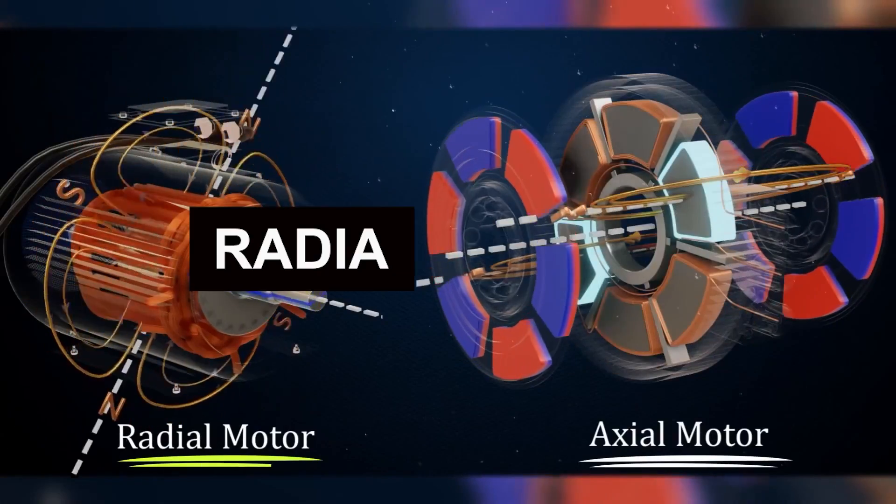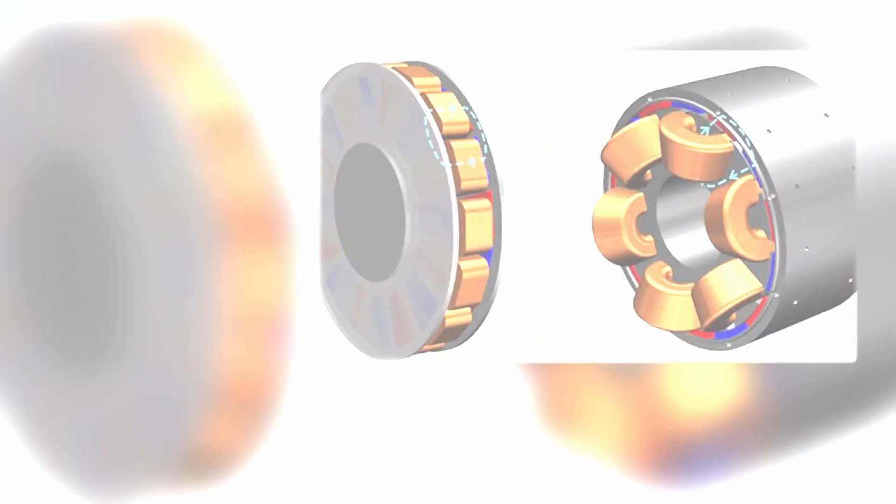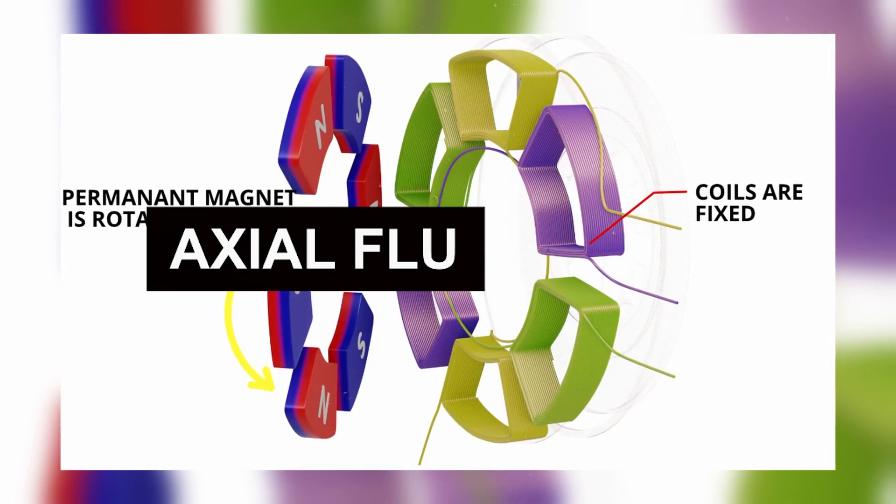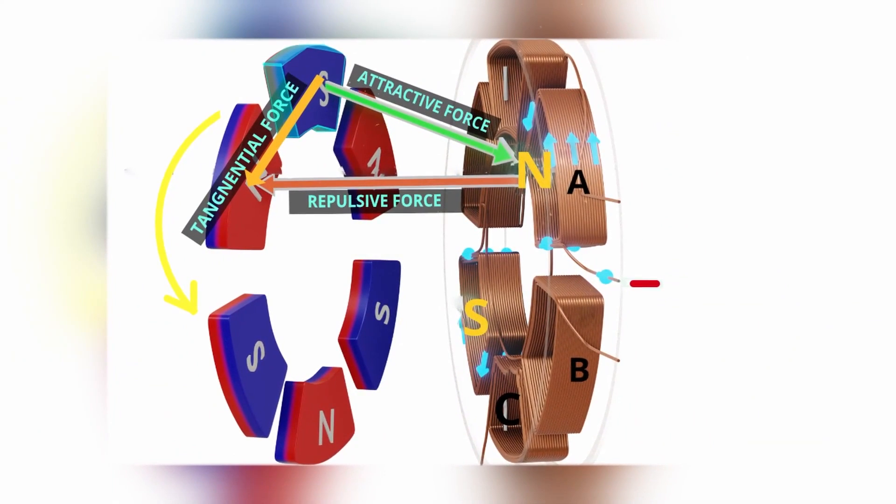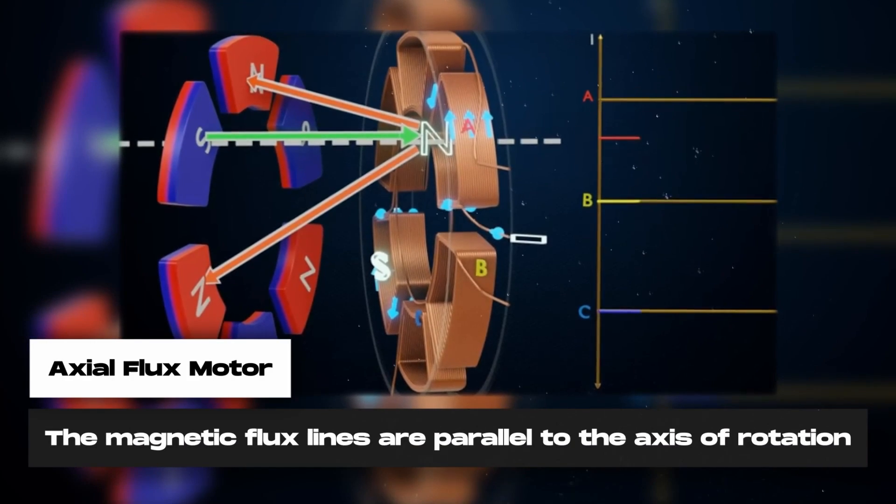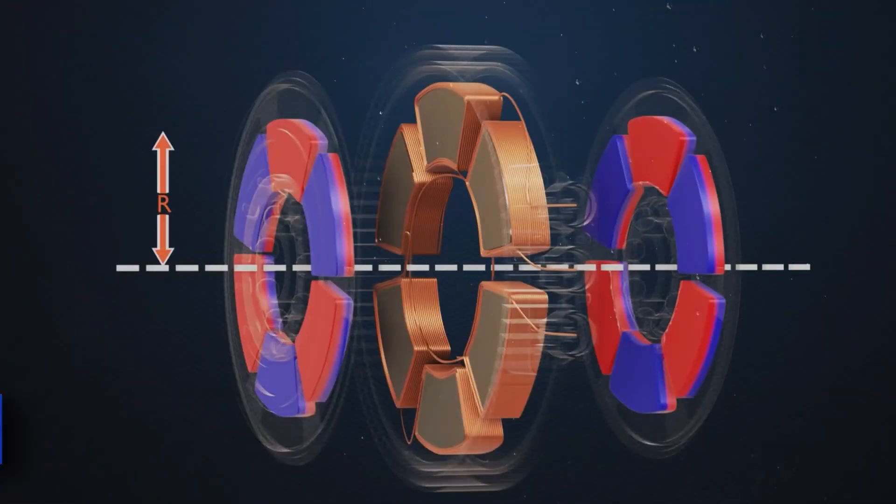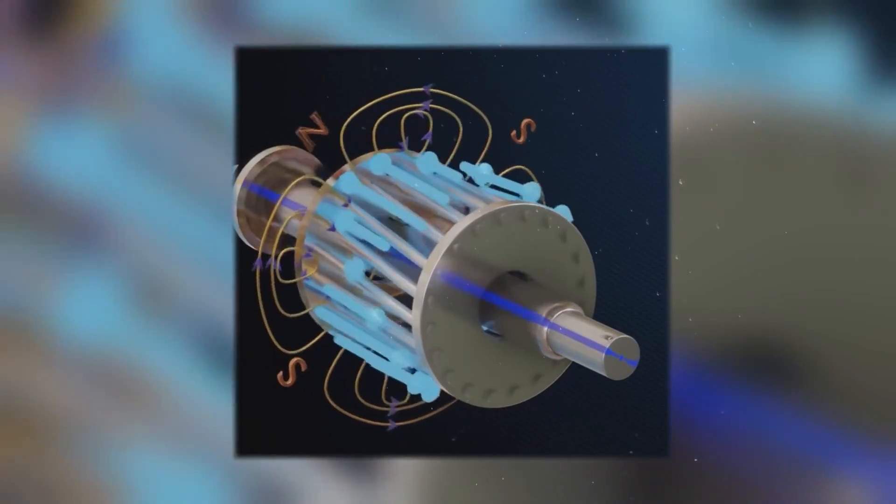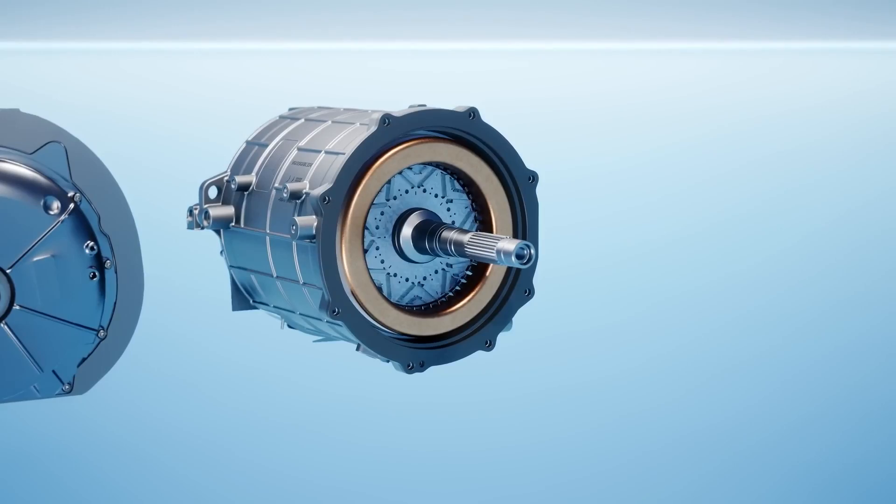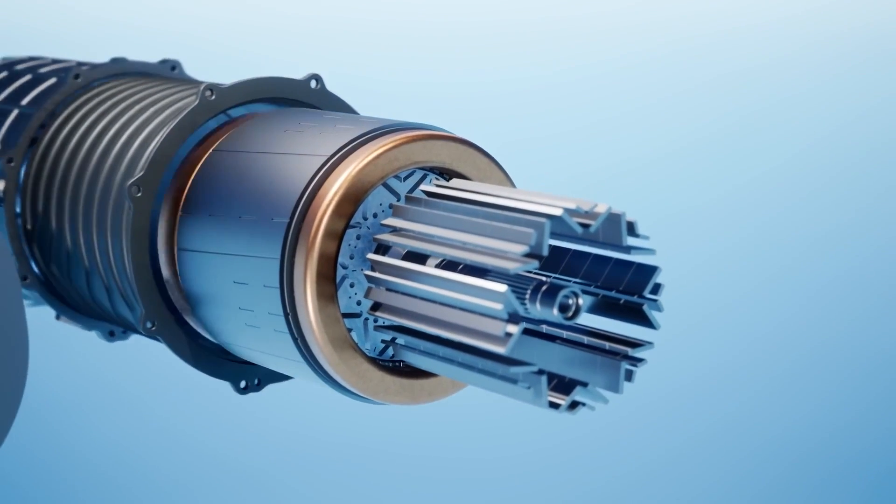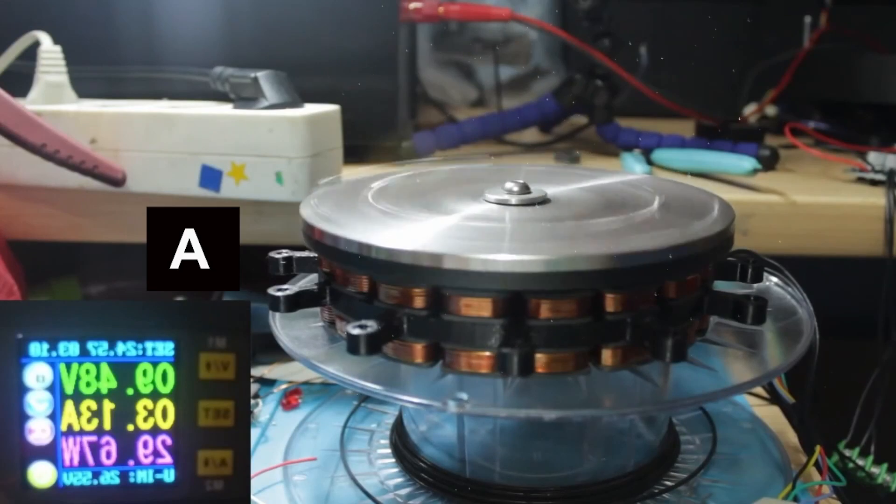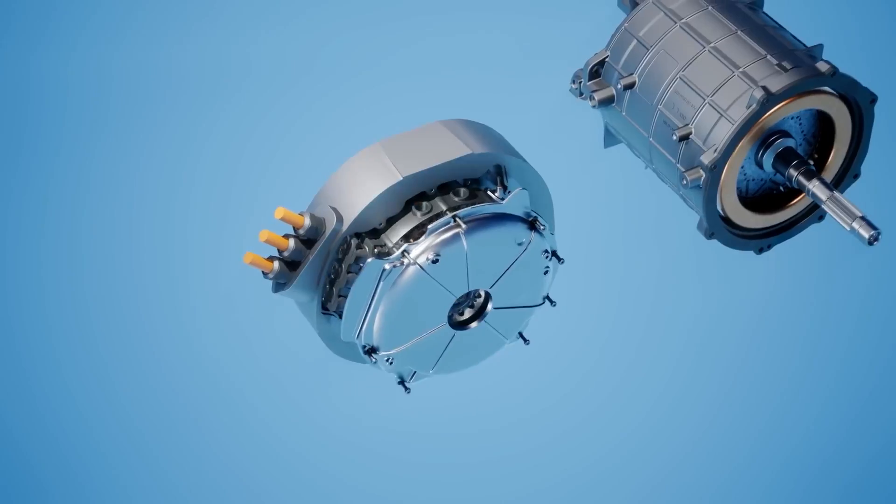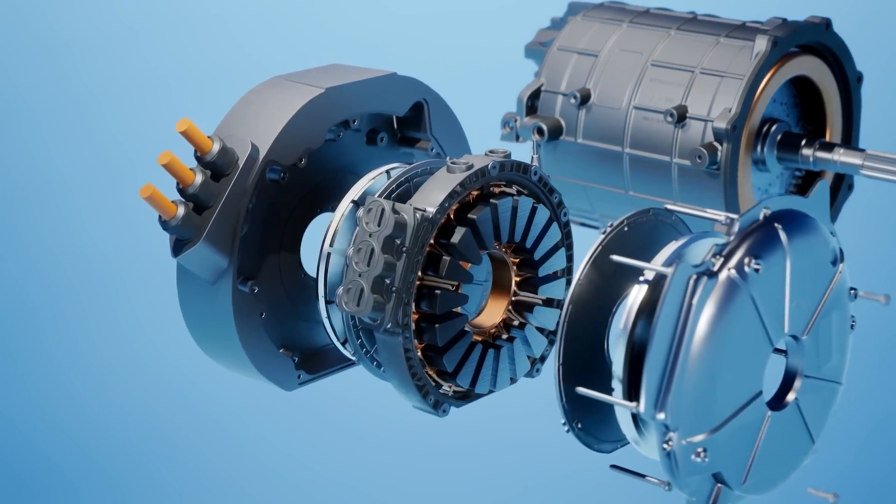Size and weight. Radial motor: Radial motors are often larger and heavier due to their outward-extending rotor design. Axial flux motor: Axial flux motors are generally more compact and lighter, making them suitable for applications where space and weight are critical factors. Cooling efficiency. Radial motor: The outward design of radial motors allows for effective air cooling, as the spinning rotor facilitates airflow. Axial flux motor: Axial flux motors may require additional cooling mechanisms due to their compact design, especially if used in high-performance applications.